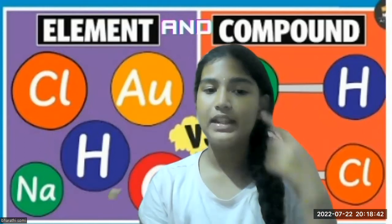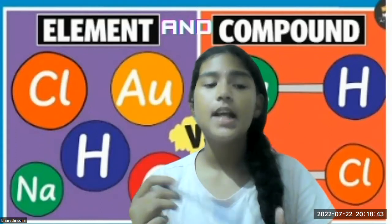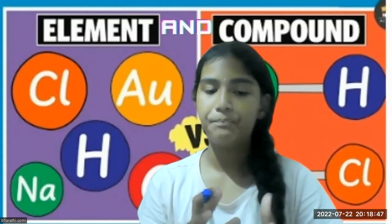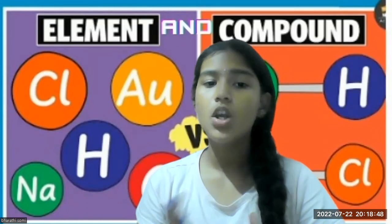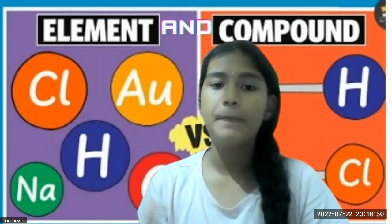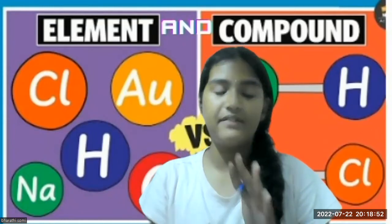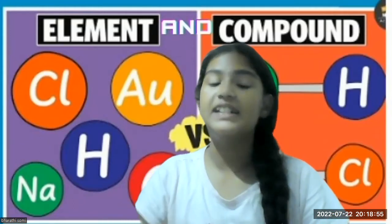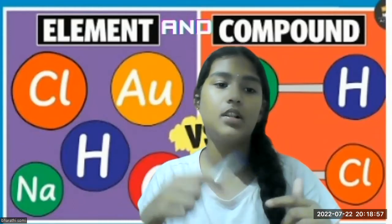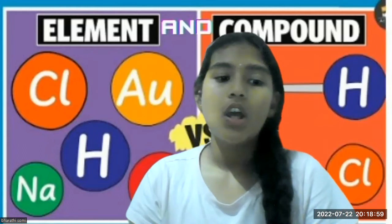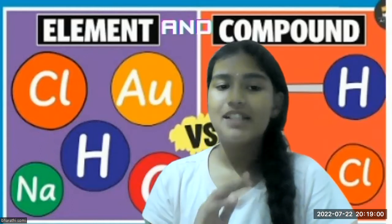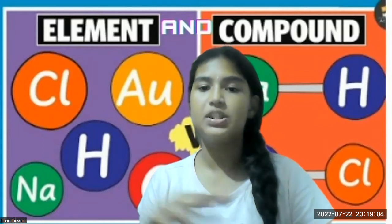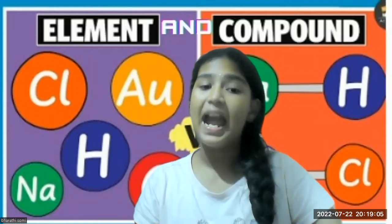Atoms cannot be seen with the naked eye — they need a microscope to see. Even with a chalk piece, that is just an example given; no one can cut it in such a way that you can actually see the atom. When combined, atoms make up two things: elements and compounds.